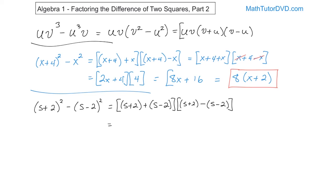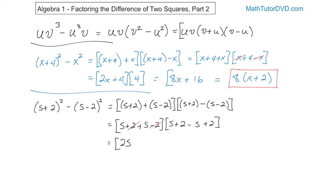Now just drop the parentheses carefully, taking it one step at a time. First bracket: s plus 2 plus s minus 2. Second bracket: I have s plus 2, but negative times s gives negative s, and negative times negative 2 gives positive 2. So simplifying: s plus s gives 2s, and 2 minus 2 is 0, so the first bracket is 2s. In the second bracket, s and negative s cancel to 0, leaving 2 plus 2 which is 4. Multiplying: 2s times 4 gives 8s. That's the final answer.